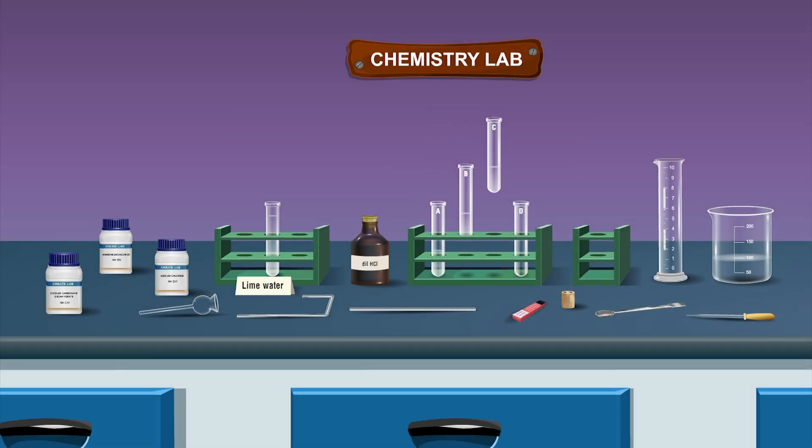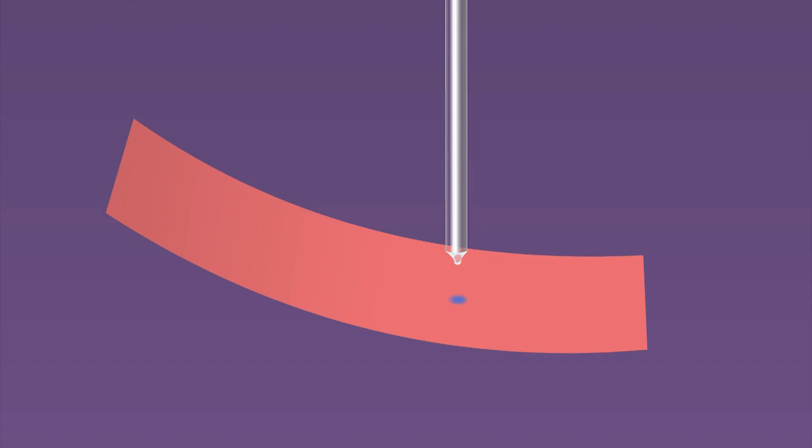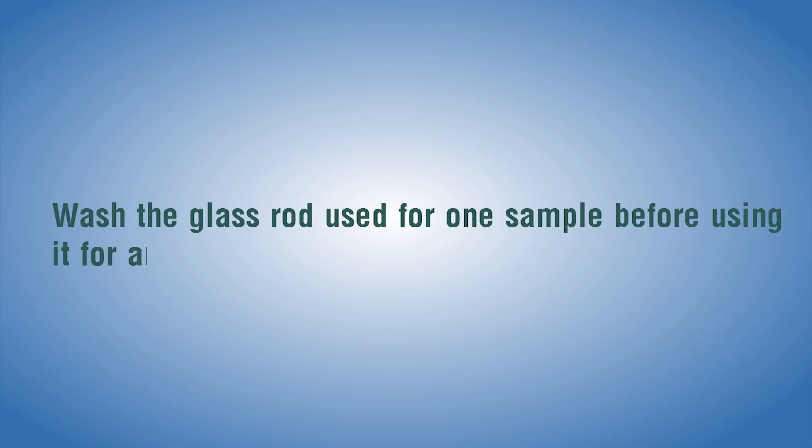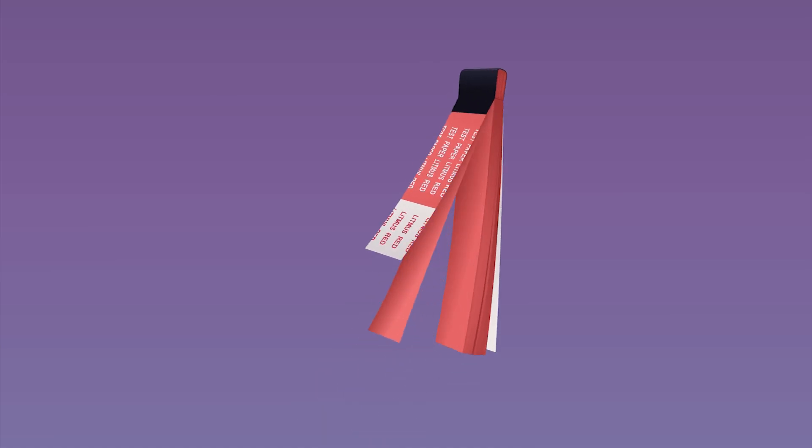Now transfer a drop of every salt solution of sodium carbonate decahydrate, ammonium chloride, and sodium chloride one by one on a separate red litmus paper strip using a glass rod. Precaution: wash the glass rod used for one sample before using it for another sample. Observe if any color changes occur in the litmus paper.